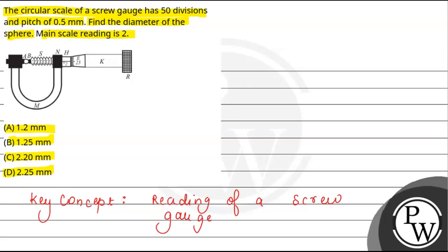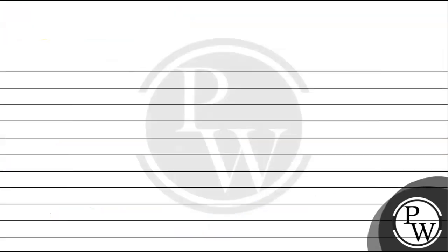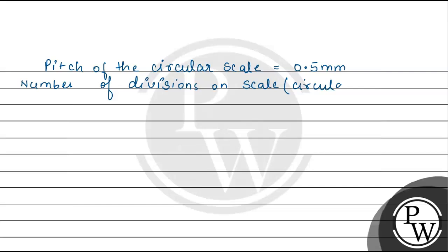The question is given that we have a circular scale of a screw gauge. It has a total of 50 divisions. And the pitch is 0.5 mm given. So, pitch of the circular scale is 0.5 mm. Number of divisions on circular scale is 50. So, least count will be 0.5 divided by 50. So, this will be equal to 0.01 mm.